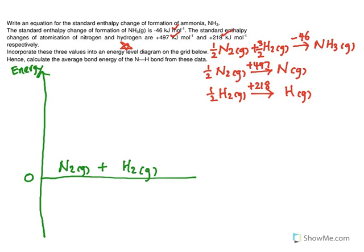Let's put in the values. You notice the second one, N2, half N2 to N. So, half N2 to N, it's +497. And, of course, before we continue, let's look at the mission. The mission, we are actually looking at the bond energy of the N-H bond. So, now, what happens is that we can put in the values.